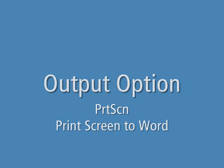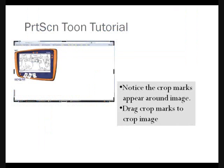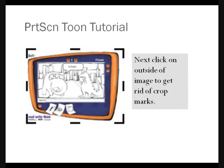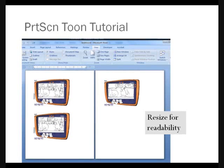Output option: the first thing you do is select panel number one, then select Print Screen — the key on your keyboard. Then paste it into Word. Double-click on the image; that brings up the crop marks in Word, which appear around the image. Drag the crop marks to crop the image. Click outside the image to get rid of the crop marks — this allows you to resize the images. Next, place them in your Word document and resize for readability.